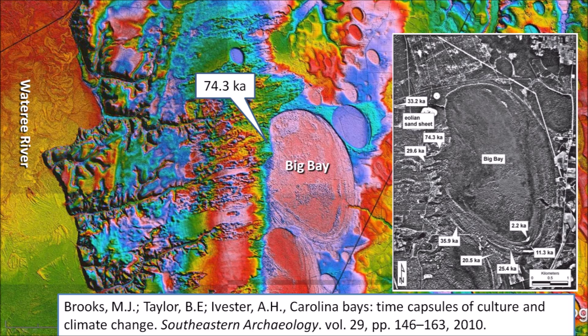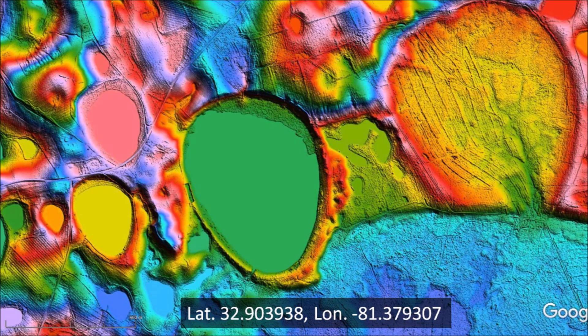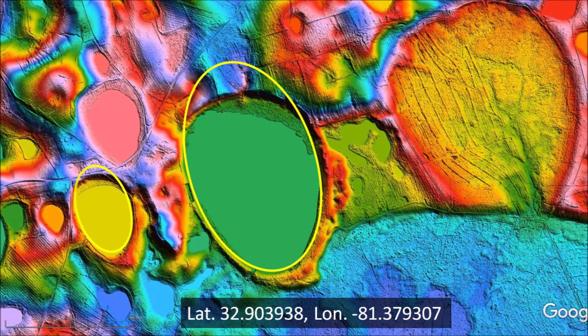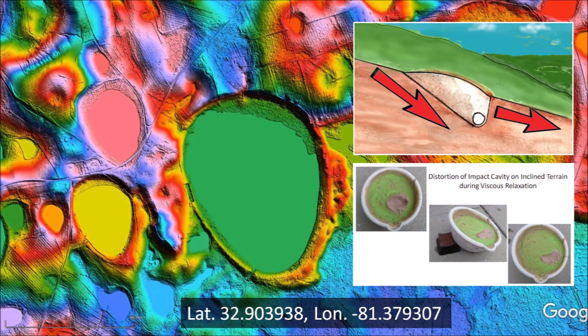In my analysis of the Carolina Bays, I have always been interested in figuring out their mechanism of formation. I made a video about deformed bays in February 2022. The guitar-pick shapes of these bays by the Savannah River were a great mystery. I eventually figured out that the bays are on inclined terrain and only their uphill side was deformed. An impact cavity on inclined terrain has a steeper slope on the uphill side, causing viscous flow into the cavity. I was able to conduct an experiment providing confirmation that this deformation mechanism is plausible — material flows into the cavity and deforms the uphill side.